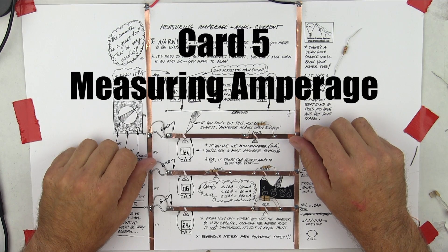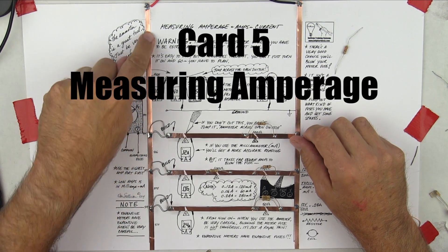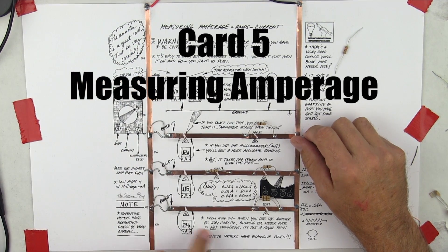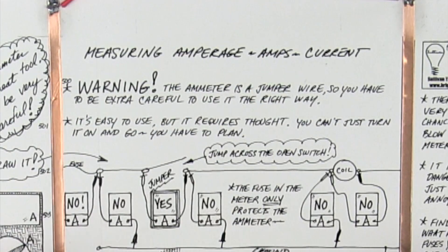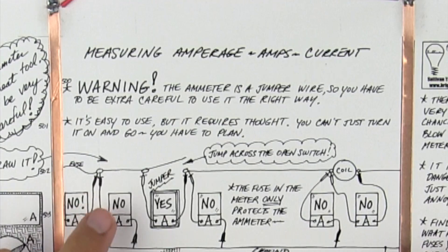Welcome to card number five, line numbers 500 through 510. This is specifically measuring amperage, which is current, amps, amperage current.